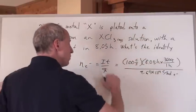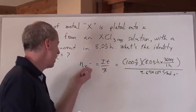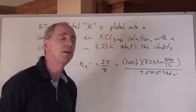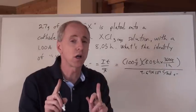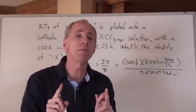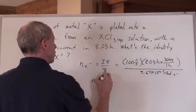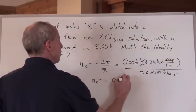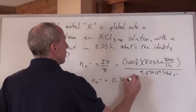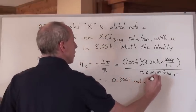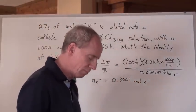All divided by 9.65 times 10 to the 4 coulombs per mole of electrons. When you do this math here you are going to get a certain number of moles - moles of electrons, right? Not moles of chemical. Moles of electrons. And by the way when you do that, number of moles of electrons here equals 0.3001 moles of electrons. But that's not moles of the chemical.